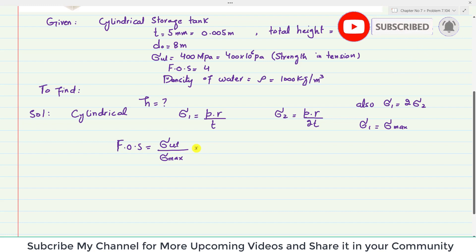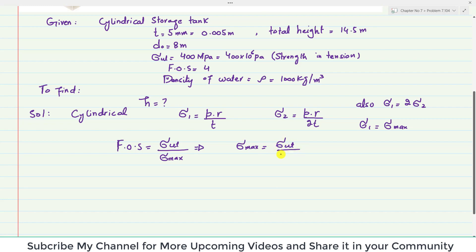As we know, factor of safety = σ_ultimate / σ_max, so σ_max = σ_ultimate / factor of safety = 400 × 10⁶ / 4 = 100 × 10⁶ Pa = 100 MPa. So the maximum allowable stress is σ_max = 100 MPa, which equals σ₁.